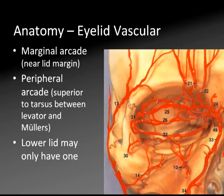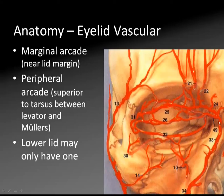Here's a picture demonstrating some of that circulation from your temporal and angular vessels onto the lids. There are also anastomoses from deeper within the orbit, which we already talked about. There's a marginal arcade near the lid margin, and there's a peripheral arcade which is superior to the tarsus between the levator and Muller's.